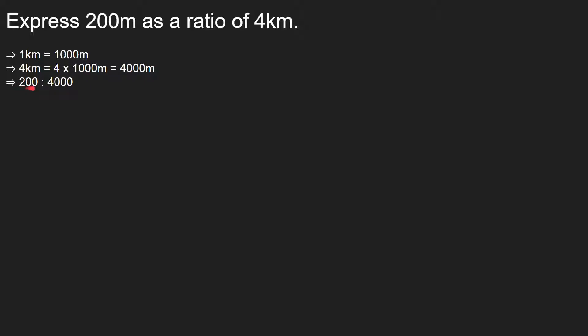1 kilometer is equal to 1000 meters, and 4 kilometers is equal to 4 into 1000 meters, so that's equivalent to 4000 meters. Next, we write our ratio as 200 is to 4000, which we can write as a fraction: 200 by 4000. We simplify it to 1 by 20, and rewrite it in ratio form. So our ratio is 1 is to 20, and we are done.